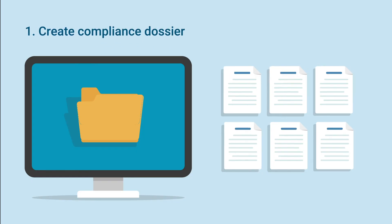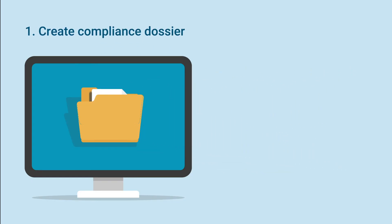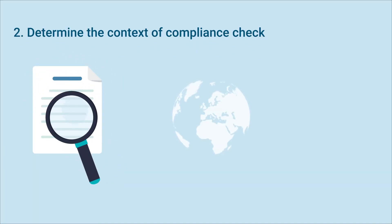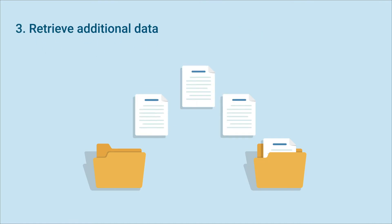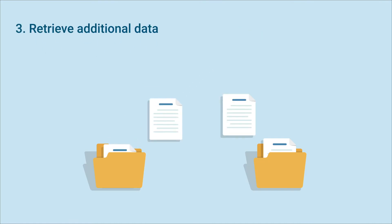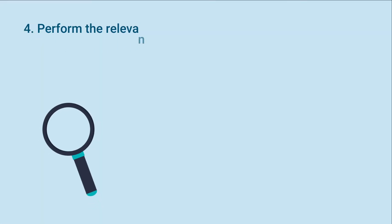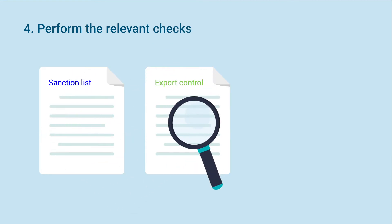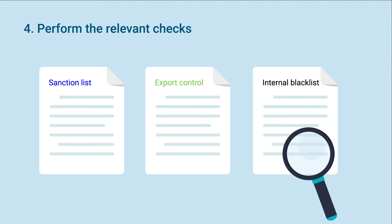First, it creates the cargo shipment compliance dossier and determines the contents of the compliance check, whether it involves countries or regulatory regimes. Additional data can be retrieved if needed. It then performs the relevant checks: a sanction list check, an export control check, and internal blacklist checks. These checks are provided as standard, and other checks and risk assessments can be added on demand.